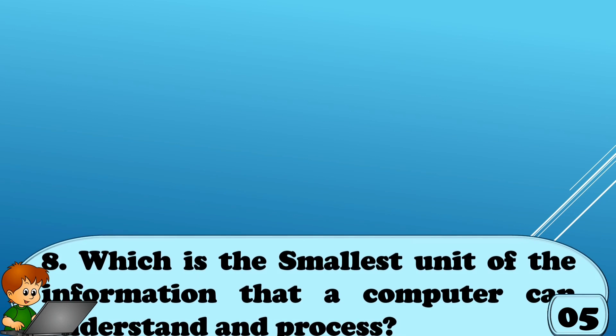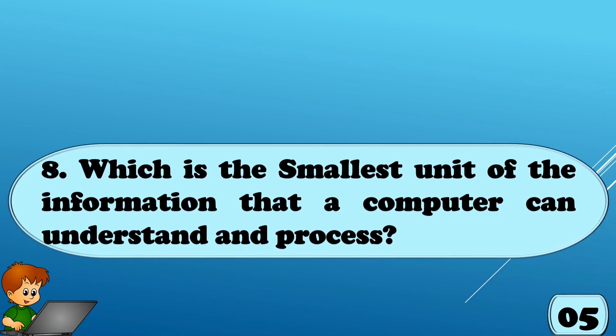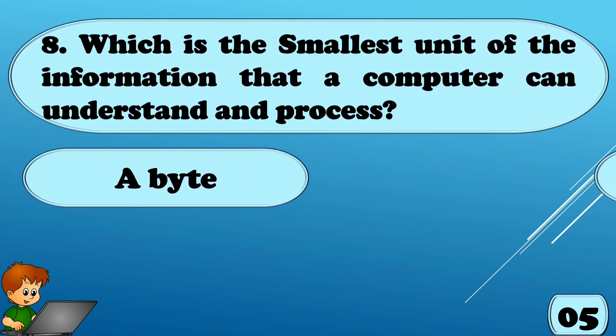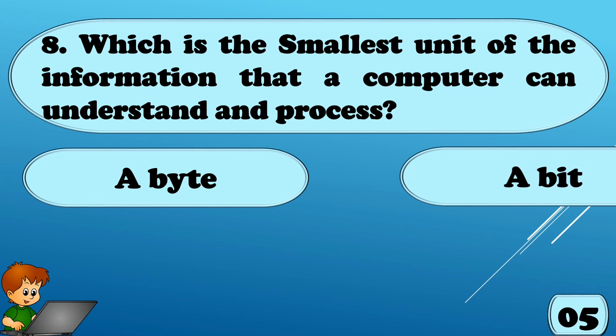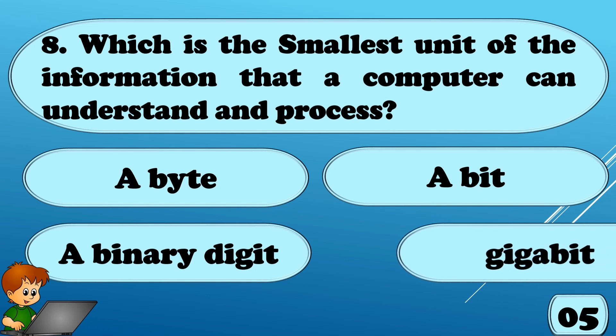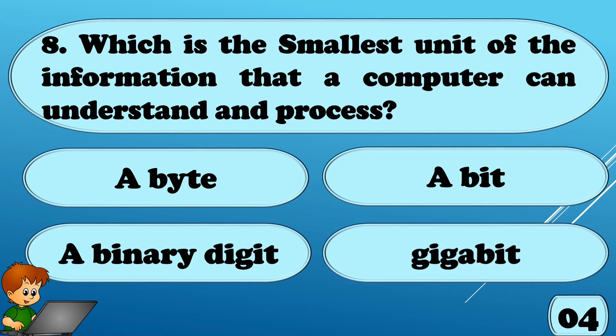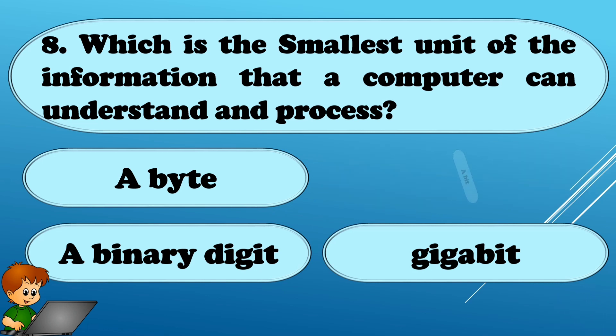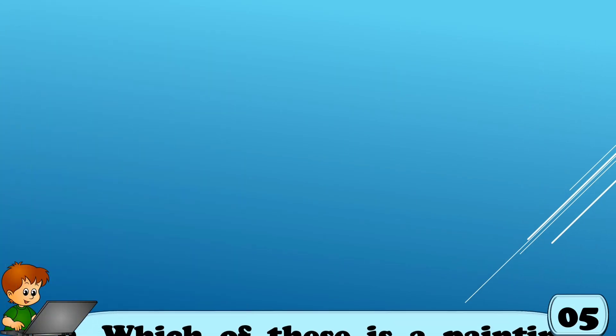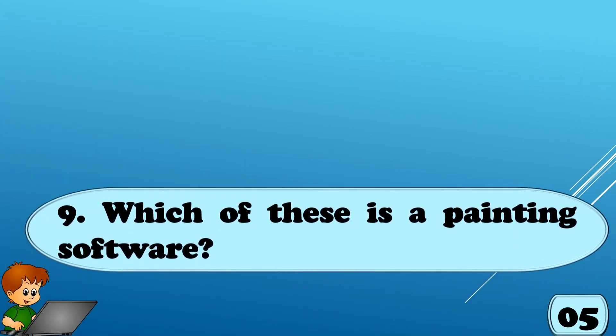Which is the smallest unit of the information that a computer can understand and process? Options are A. A byte, Option B. A bit, Option C. A binary digit, or Option D. Gigabit. The correct answer is A bit.